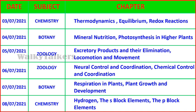Botany covers Mineral Nutrition and Photosynthesis in Higher Plants. Zoology covers Excretory Products and Elimination, and Locomotion and Movement. Additional Zoology chapters include Neural Control and Coordination, and Chemical Control and Coordination. Botany also covers Respiration in Plants, and Plant Growth and Development. Chemistry covers Hydrogen, S-Block Elements, and P-Block Elements. With this, you can complete the portions in about five weeks and three months.